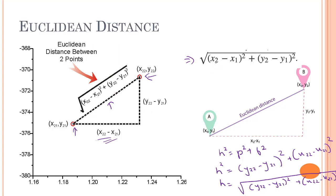So the formula is: the square root of (x2 minus x1) squared plus (y2 minus y1) squared equals the Euclidean distance between two data points. Here is one data point and here is another. We have x2 minus x1 as the base and y2 minus y1 as the perpendicular, forming a right angle triangle. In a right angle triangle we know h squared equals p squared plus b squared, so we can easily get the hypotenuse.